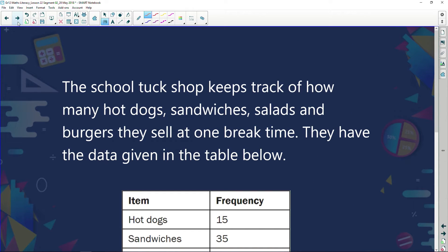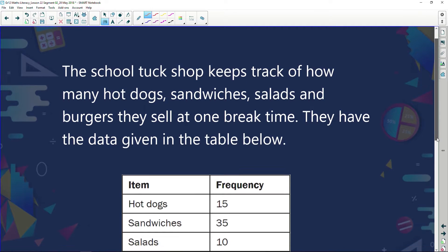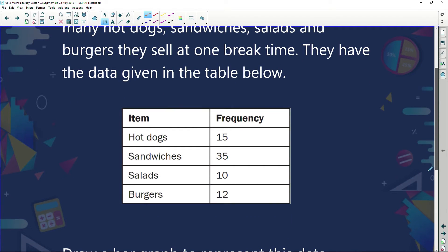Here we go. A school tuck shop keeps track of how many hot dogs, sandwiches, salads, and burgers they sell at one break time. They have the data given in the table below. So here's the data. Hot dogs, 15. Sandwiches, 35. Salads, we sold 10. Burgers, we sold 12.